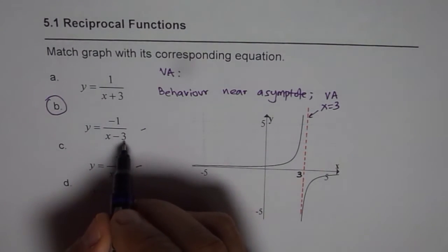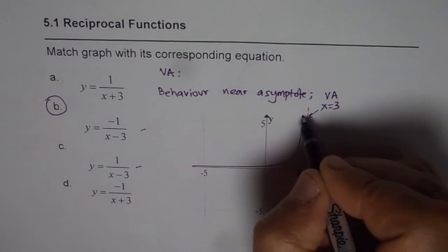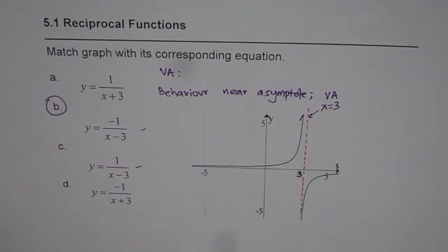So if I write 2.9, I get 1 divided by 0.1 which is 10, which is high value and positive. So we can get this. So testing vertical asymptotes and the behavior near the vertical asymptotes help us to identify the answer.